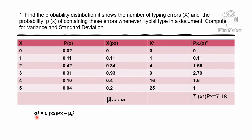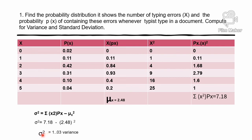Using the variance formula: σ² = Σ(x²·P(x)) − μ² = 7.18 − (2.48)² = 1.03. So the variance is 1.03. The standard deviation is the square root of 1.03, which equals 1.01. This is our standard deviation.